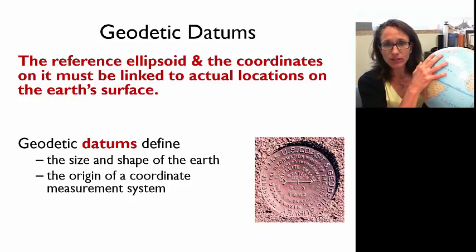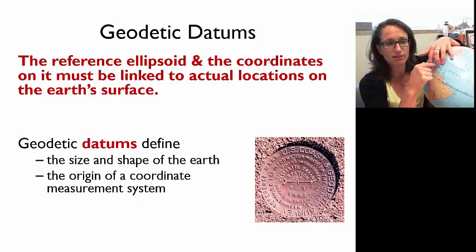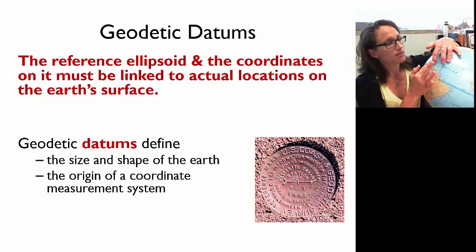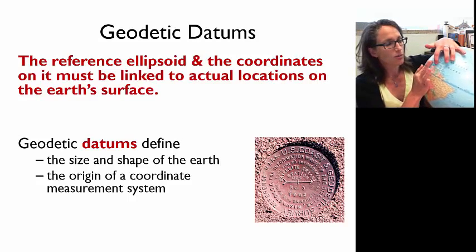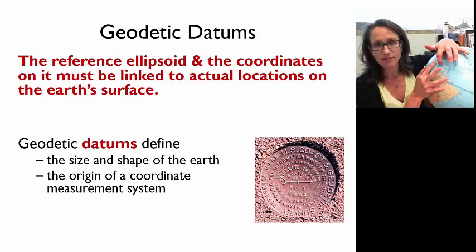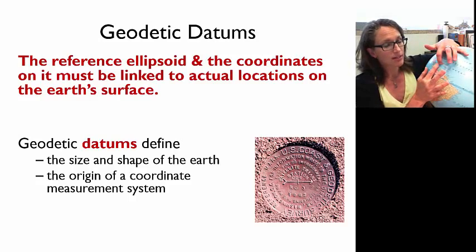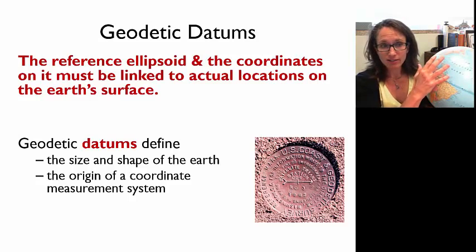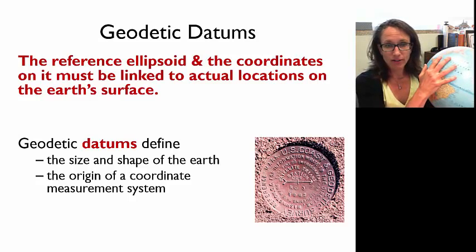That's why if we change our datum, we change the description of a point. So if we're at the same place but we move this 90-degree longitude line a little to the west, now this point is 85 degrees west. If we move it here, then maybe it's 90 degrees west. So what we're doing when we change the datum is actually adjusting where those lines of latitude and longitude are on the Earth.